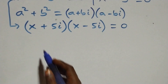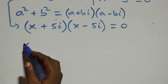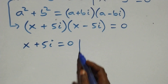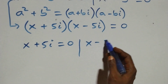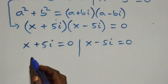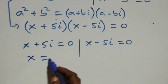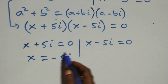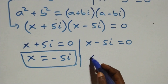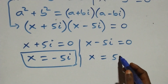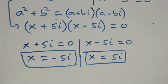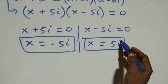From this we have two sub-cases: x plus 5i equals zero, or x minus 5i equals zero. This gives us x equals minus 5i, which is a complex solution. So we have two complex solutions from this case.